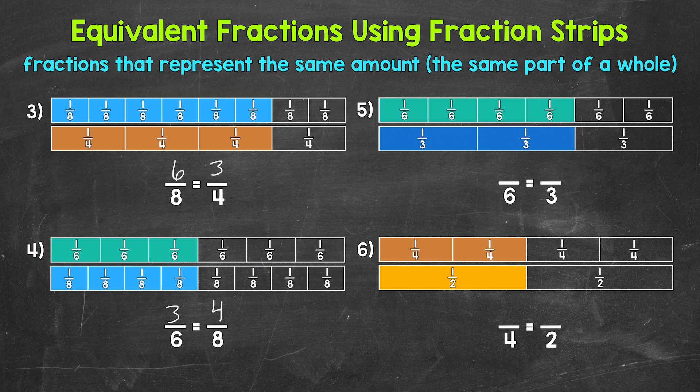Moving on to number five — the top fraction strip has six equal parts and four are shaded in, so that fraction strip is showing four-sixths. That's going to be equivalent to how many thirds? The bottom fraction strip has three equal parts and two are shaded in, so that's two-thirds. Both fraction strips are showing the same amount, the same part of the whole rectangle, so four-sixths and two-thirds are equivalent.